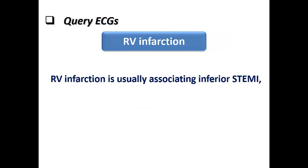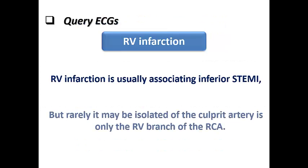RV infarction usually occurs in association with inferior STEMI. Rarely it may be isolated if the culprit artery is only the RV branch — for example, post-PCI — so sometimes you may see isolated RV infarction, but in most cases it is combined with inferior STEMI.